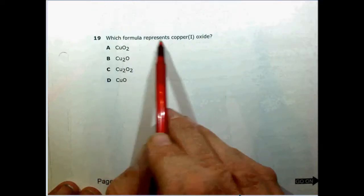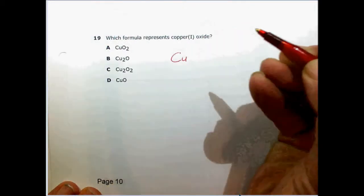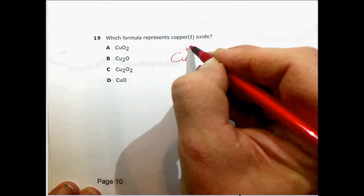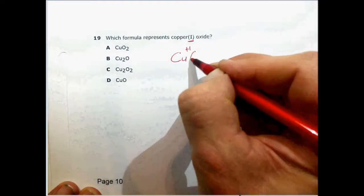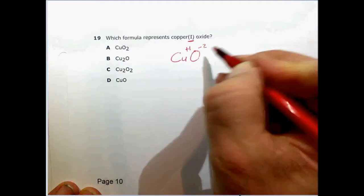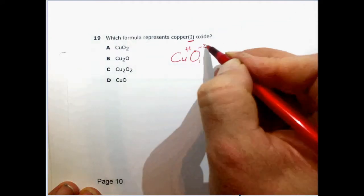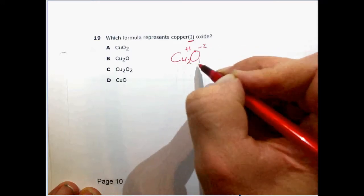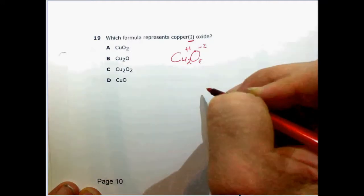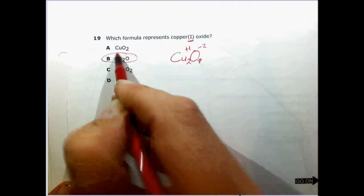Which formula represents copper(I) oxide? They've told us that the charge is plus 1. We know that oxygen always has a minus 2 charge, so we have to crisscross. Our 1 would go down here if we wrote 1s, and our 2 goes here, so Cu2O is the correct answer.